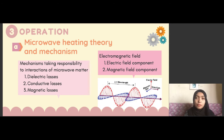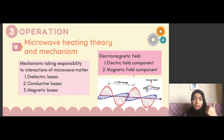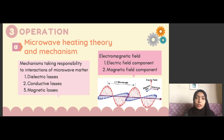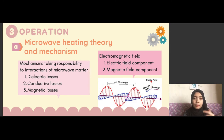There are many mechanisms responsible for microwave-matter interaction, which can be generalized as electric losses, conductive losses, and magnetic losses. In an electromagnetic field, there are two components: the electric field component and the magnetic field component.